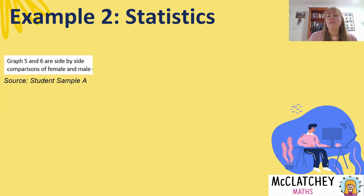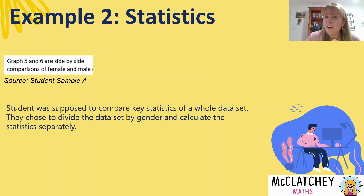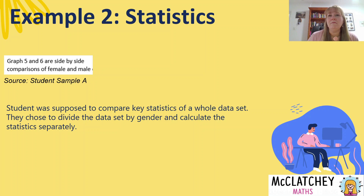Example two is a simple statistics one — student sample A. They compared information and split the data into male and female. However, the task asked them to look at the data set as a whole; it didn't ask them to split by gender. They decided to do that and calculate statistics separately — that is not discerning. It's not a wise approach when the task hasn't asked for it. So be very careful: if you're not asked to split data up by gender, don't do it.